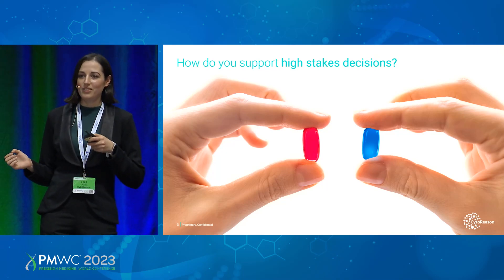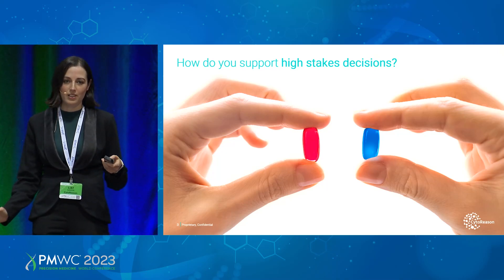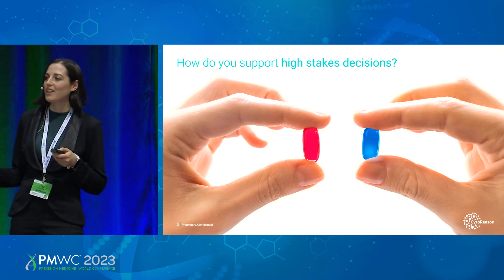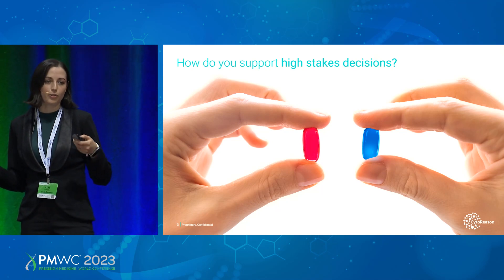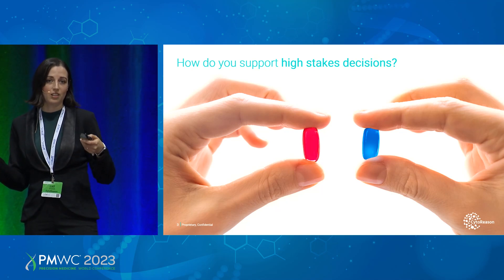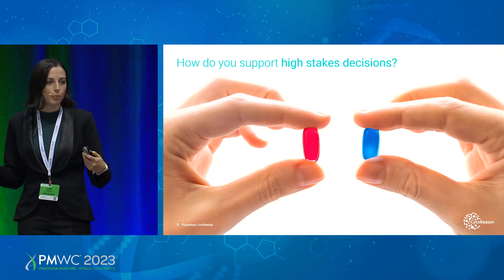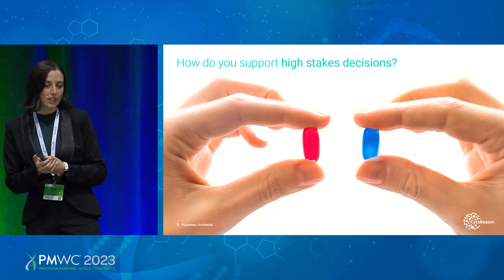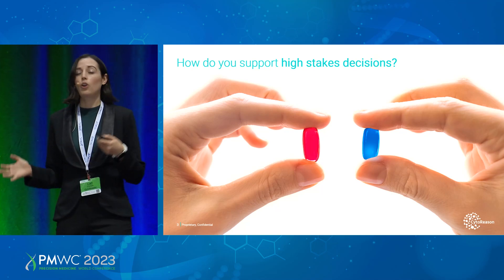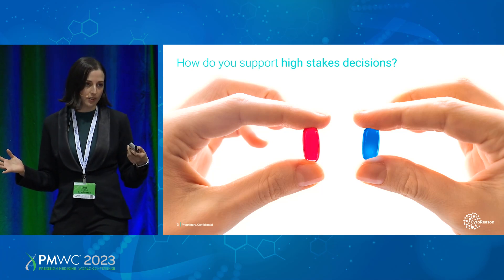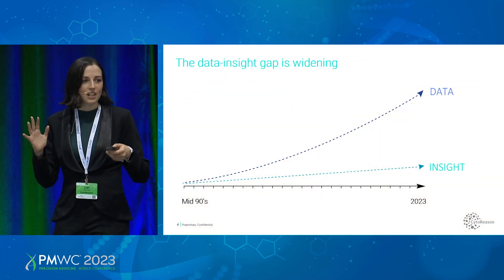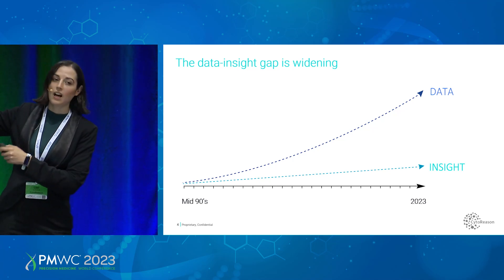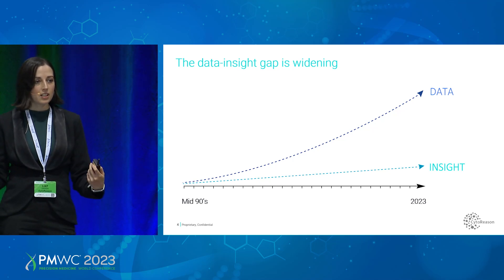Imagine you have to take a decision — a hundreds of millions of dollars decision regarding a drug you're developing. You may be facing questions like: what other drugs are relevant for the disease I'm working on? Or how does my drug compare to other standard of care drugs within a given disease? To answer these questions, you'd want to look at all the relevant data and see what you can learn from it. There's tons of data — the hard thing is to get insight out of it efficiently. And this is what we do at CiderEason.